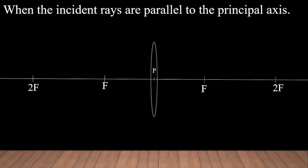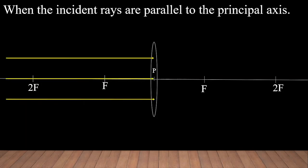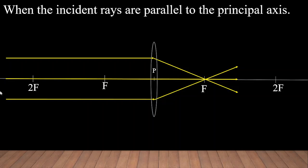When the incident rays are parallel to the principal axis, after refraction through the lens the rays pass through the focus. That means when the object is placed at infinity, the image is formed at the focus. The image is real, inverted, and highly diminished. Now that we have understood image formation by a convex lens with the help of ray diagrams, let us perform this activity using a lens and a candle as an object.